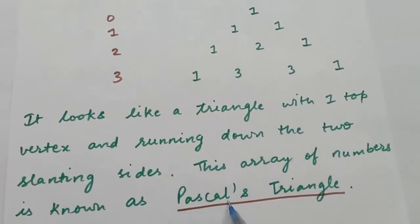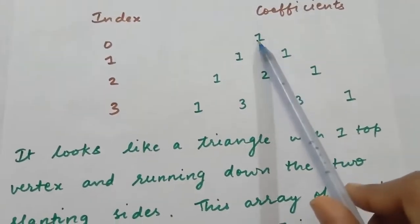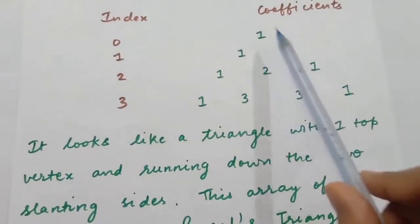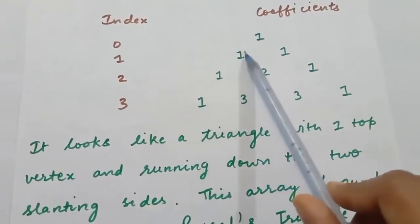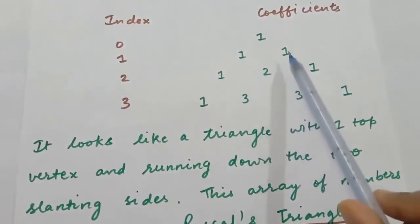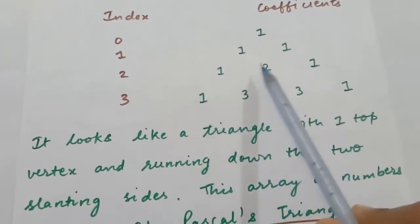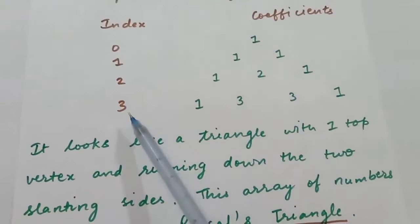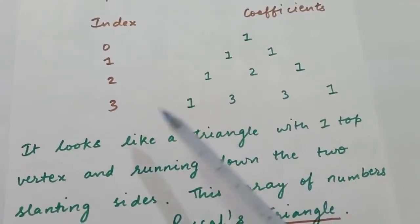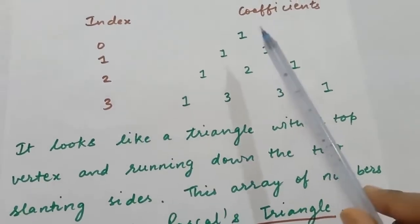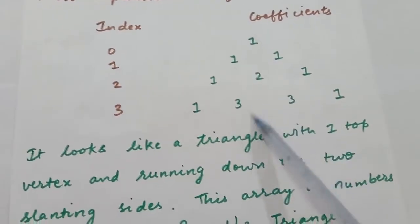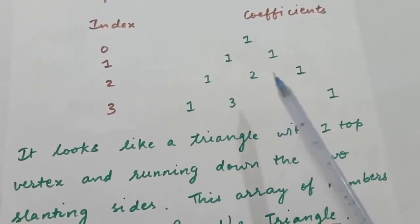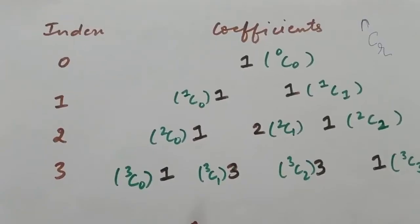This array of numbers is known as Pascal's triangle. Each number is obtained by adding the two numbers above it: 0+1=1 on the sides, 1+1=2 in the middle for row 2, and 1+2=3 and 2+1=3 for row 3. However, it is also difficult to find coefficients for higher indices using this addition process, so we will relate Pascal's triangle coefficients to the combinations formula.